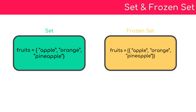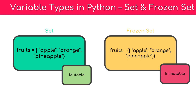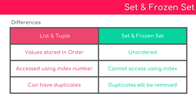The next variable types we are going to see are the set and the frozen set. Values for a set are enclosed within curly braces. If the set variable is further enclosed within a rounded bracket, it becomes a frozen set. A set is a mutable type whereas a frozen set is immutable, similar to tuples. Unlike lists and tuples, items in a set or frozen set are not stored in order, cannot be accessed using an index, and duplicate items are automatically removed. To access elements of a set or frozen set you must use a loop.